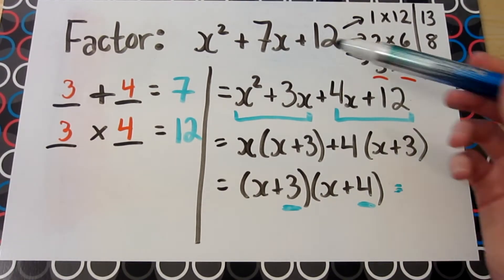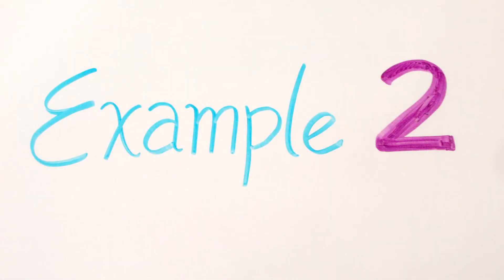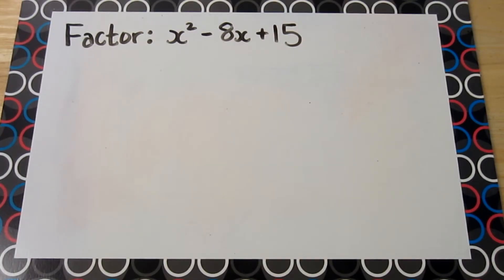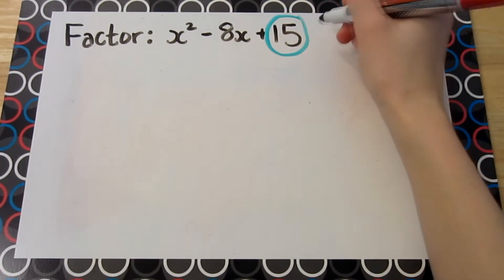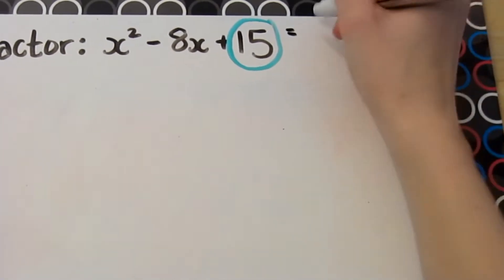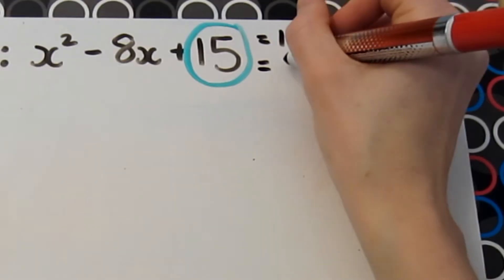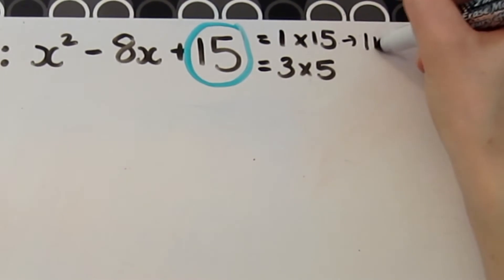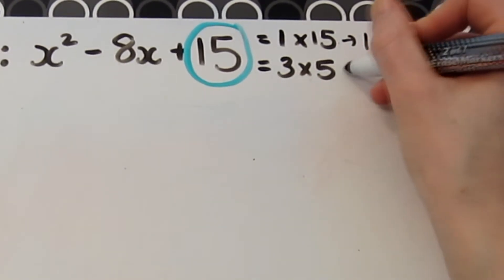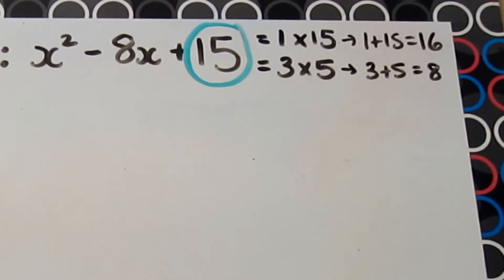Alternatively, you can proceed with the long method, which is called decomposition. Let's look at another example — the question posed at the beginning of this video: x squared minus 8x plus 15. We start by looking at factors of 15 first. So 15 equals 1 times 15, and it also equals 3 times 5. However, if we look at each of these factors, 1 plus 15 gives us 16, and 3 plus 5 gives us 8.